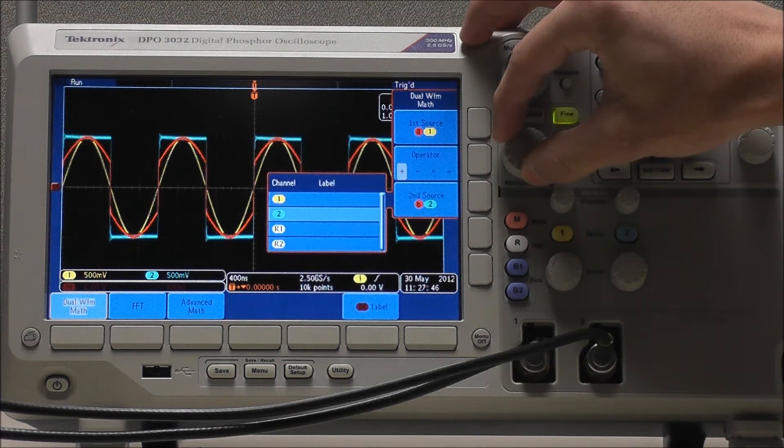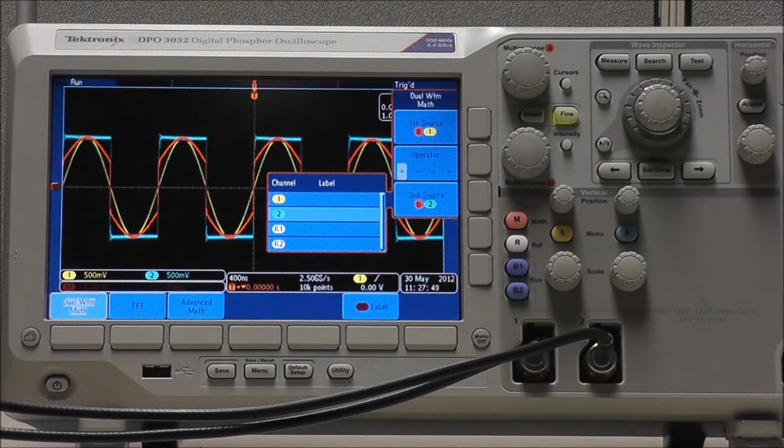We can use multipurpose B to select our second source. And again, we can select either channel or reference waveform, but for now we will select channel 2.